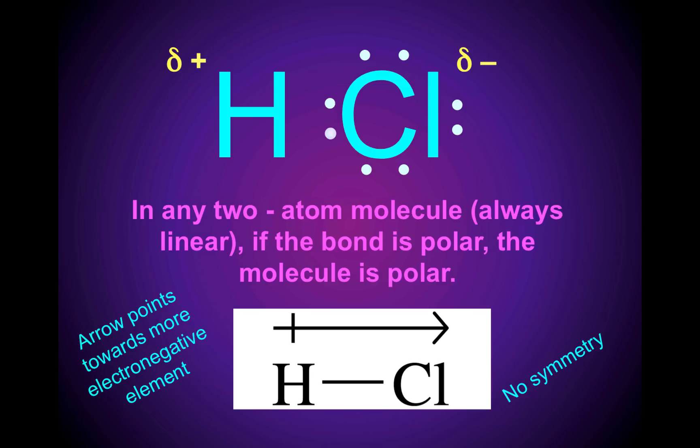In any two-atom molecule that is always linear, if the bond is polar, the molecule is polar — there is no symmetry. Consider the molecule hydrogen chloride. The arrow points towards the more electronegative element. The chlorine has a partial negative charge and the hydrogen has a partial positive charge. The HCl molecule is a polar molecule; it is a dipole.